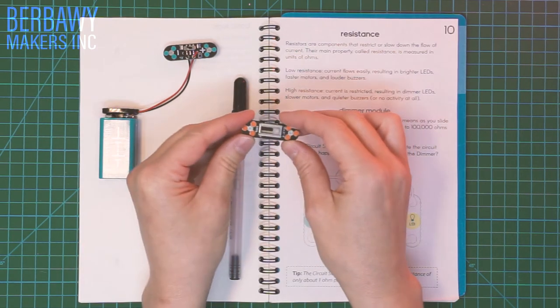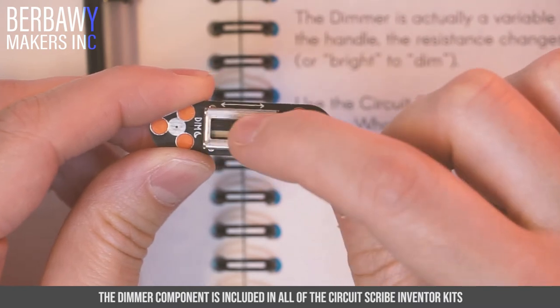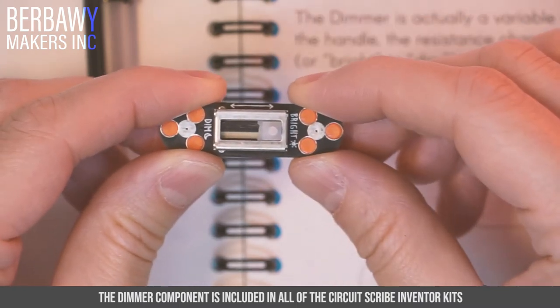Our new component on the bench is the dimmer. The dimmer component is a linear potentiometer, and a potentiometer is a variable resistor.